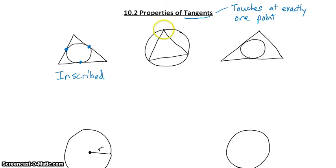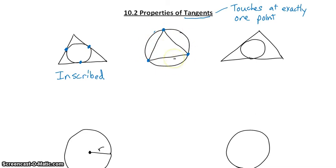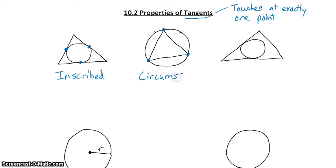In example number two, each vertex of the triangle touches the circle exactly once. The circle is on the outside of the triangle. If we go all the way around a circle, that's the circumference of the circle. So we can say that the circle is circumscribed about the triangle.